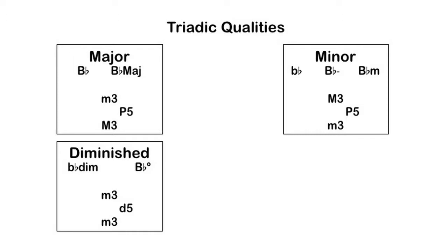Two minor thirds added together creates a diminished fifth between the root and the fifth. Diminished triads have a very dissonant and energetic sound — a sound that wants to resolve to something more stable.